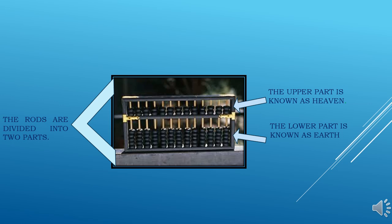The abacus is divided into two parts. The upper part is known as heaven and the lower part is known as earth. It consists of beads or discs that can be moved up and down on a series of sticks or strings within a rectangular wooden frame. It is based on the concept of place value.